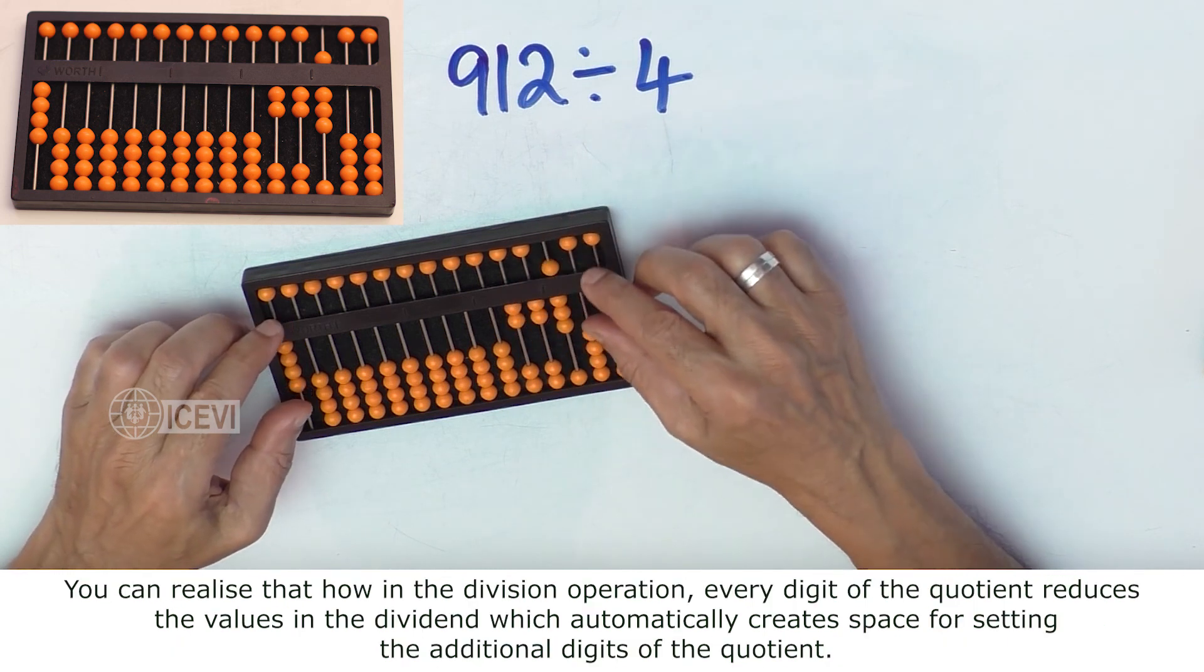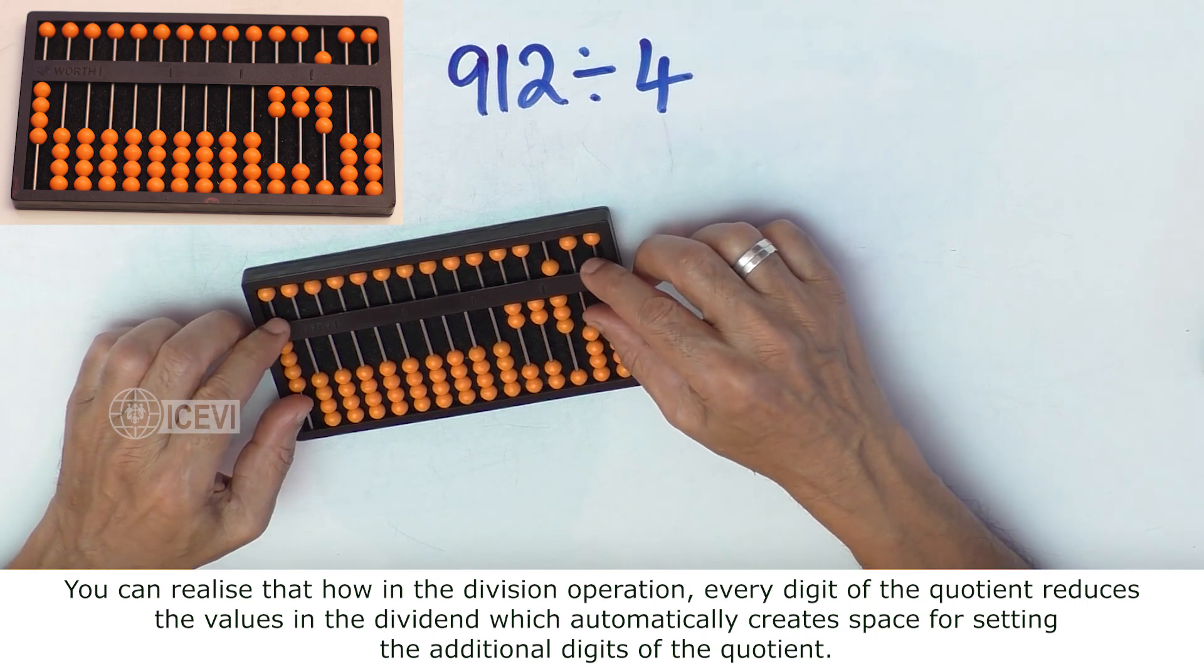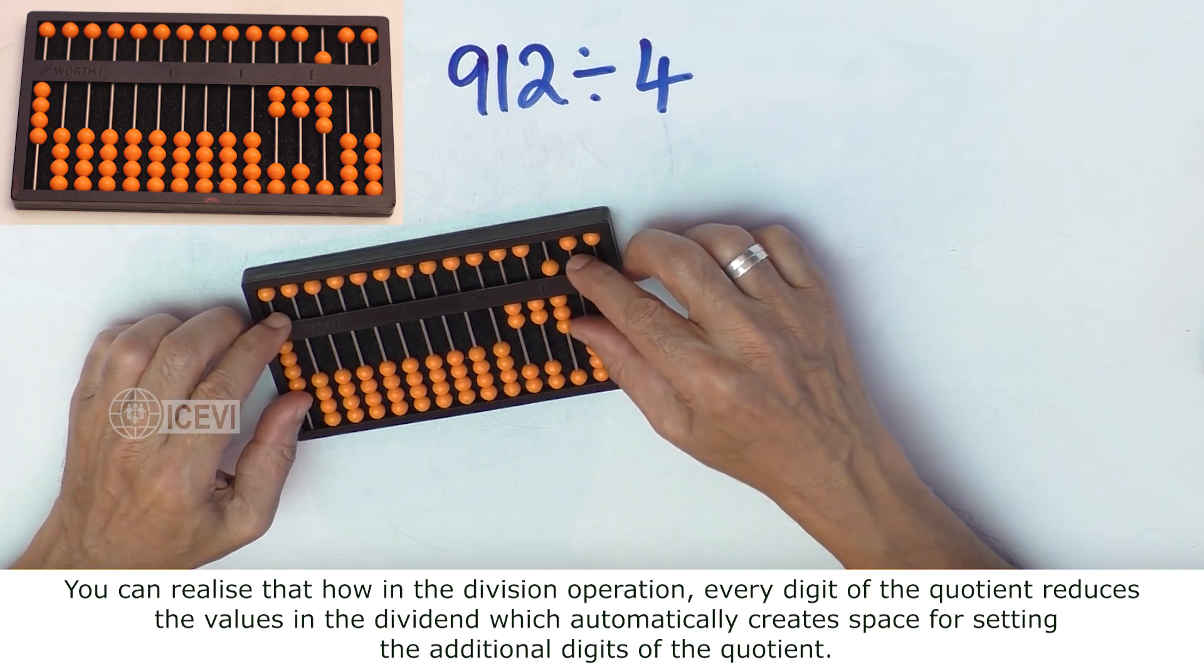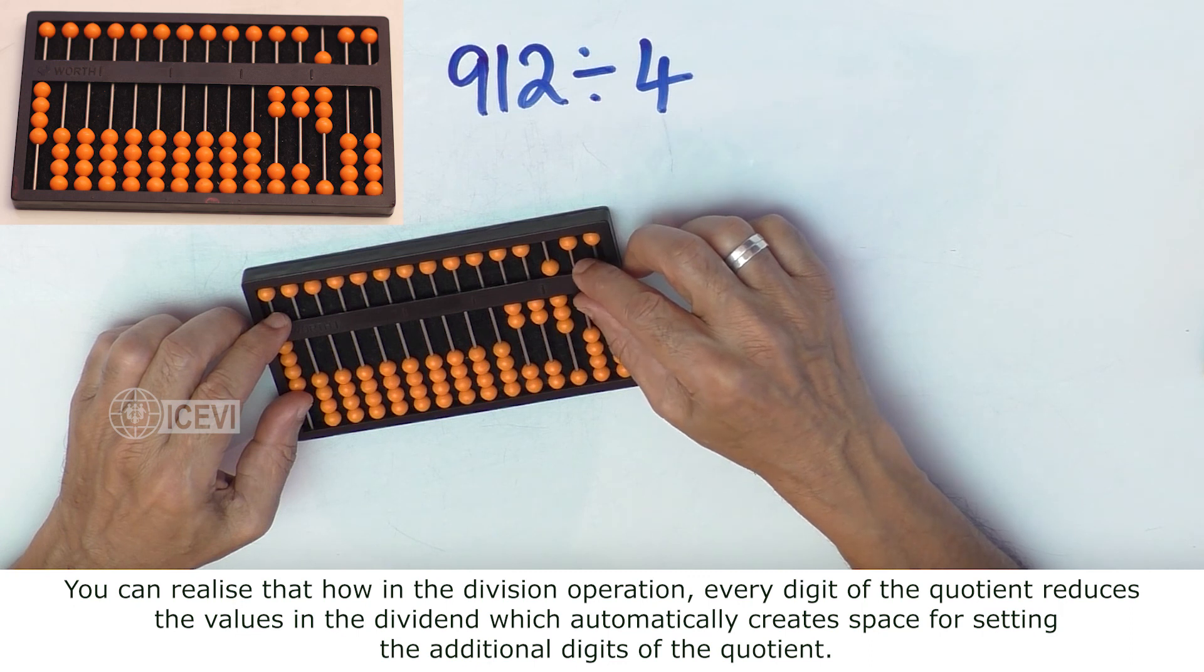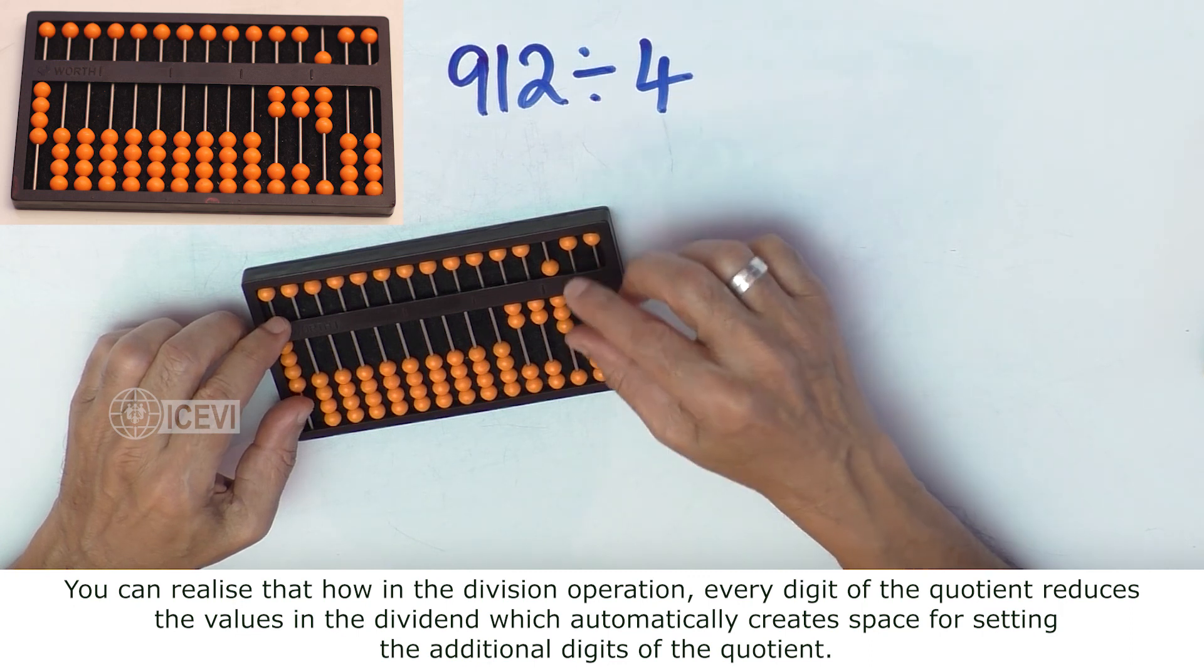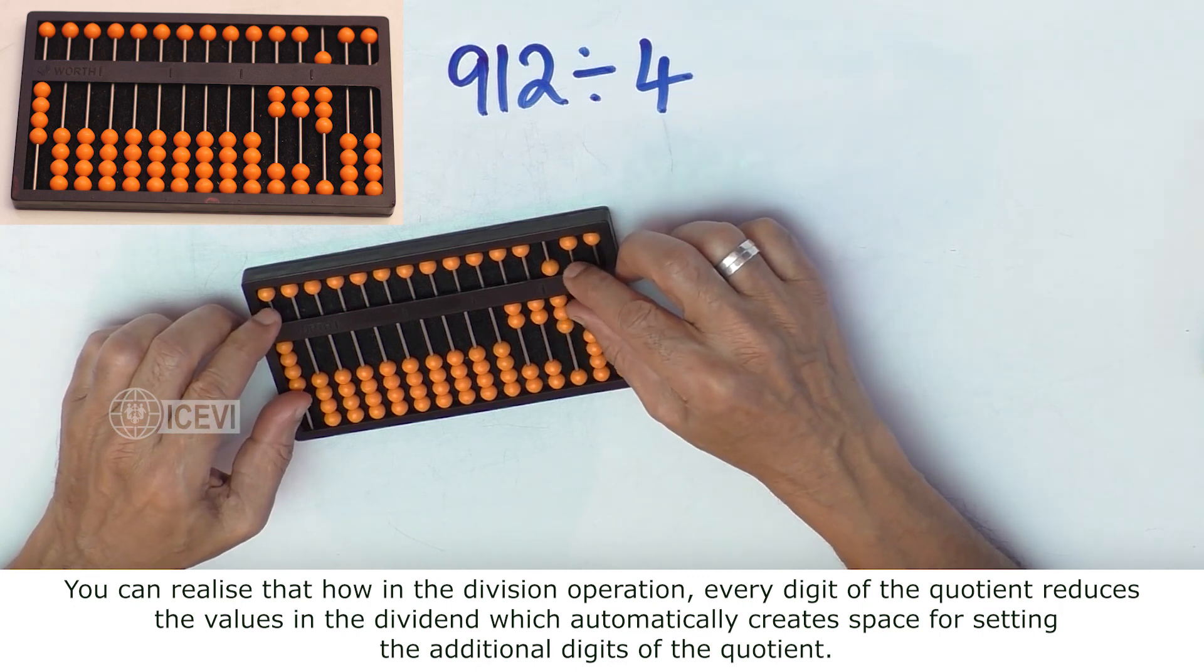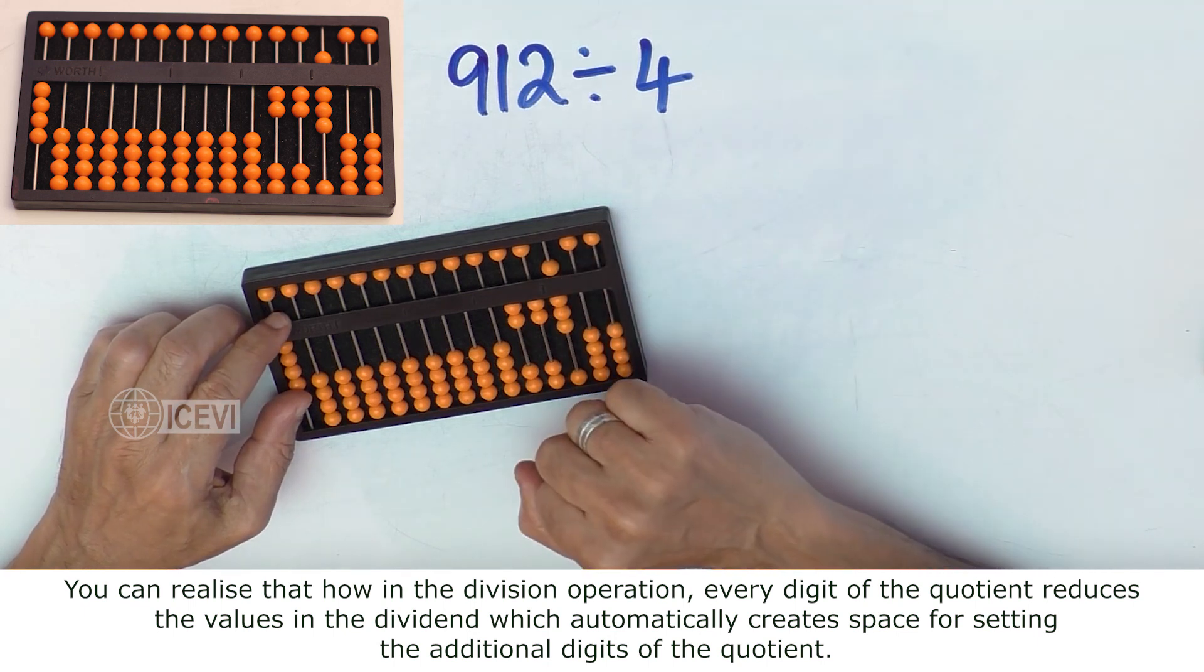You can realize that in the division operation, every digit of the quotient reduces the values in the dividend, which automatically creates space for setting the additional digits of the quotient.